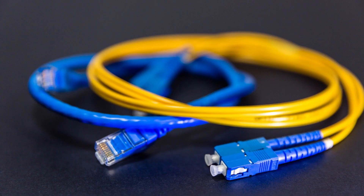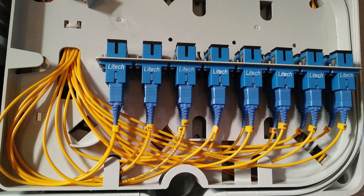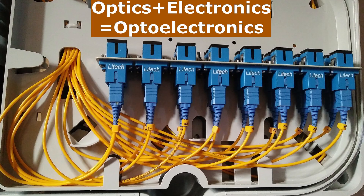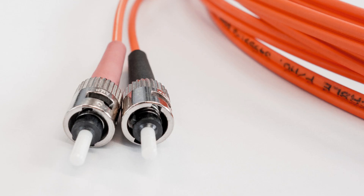The seventh branch of electronics is optoelectronics. Optoelectronics is the branch of electronics that combines optics, i.e. light, with electronics. It includes the use of light sources, light detectors, and mechanisms to carry and control light.